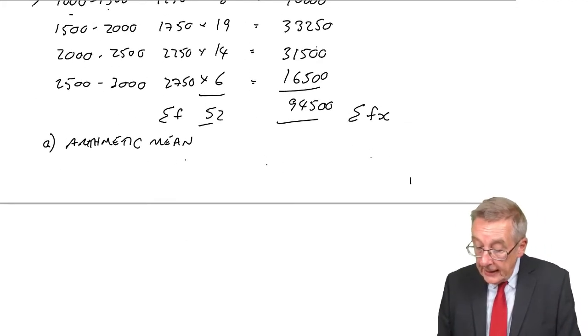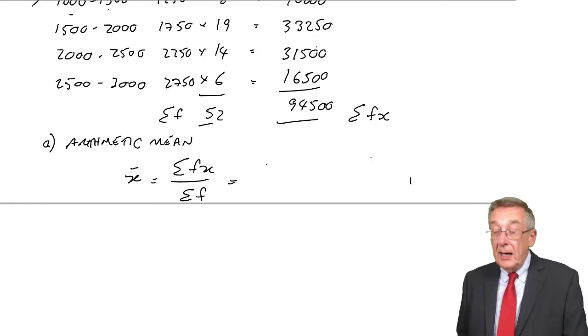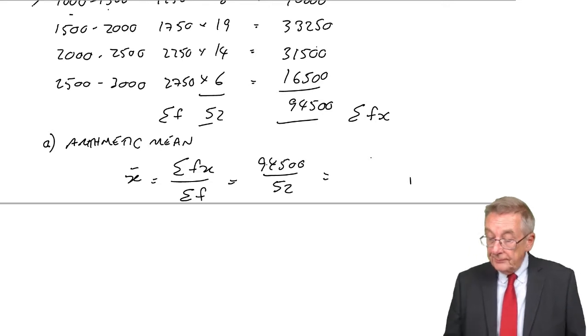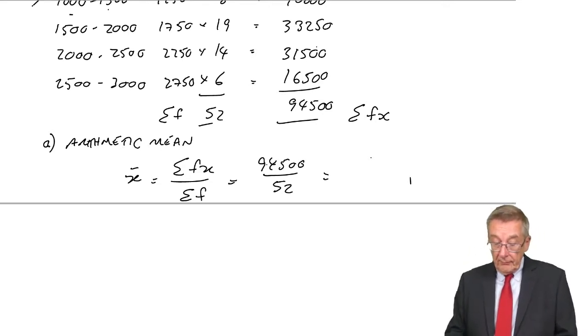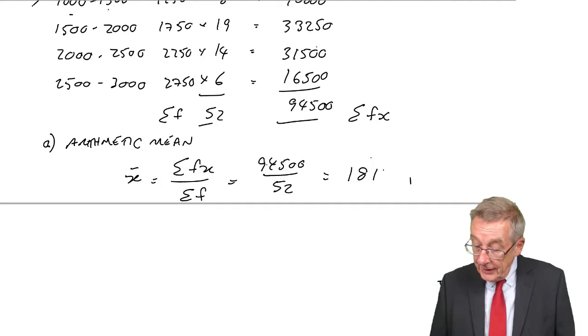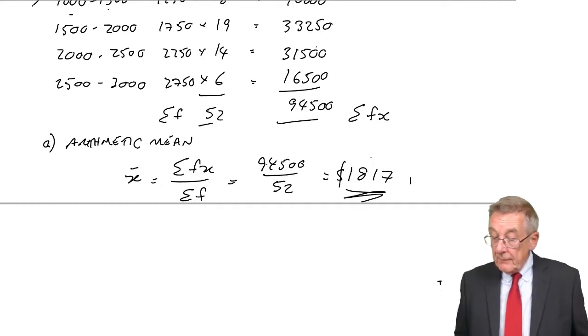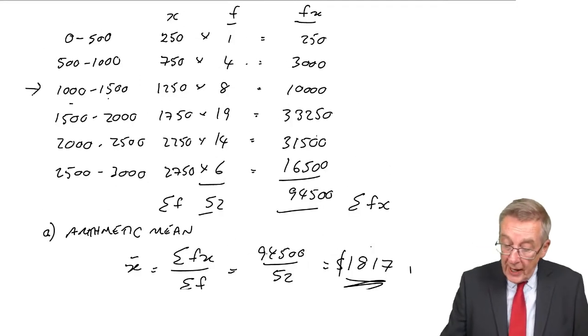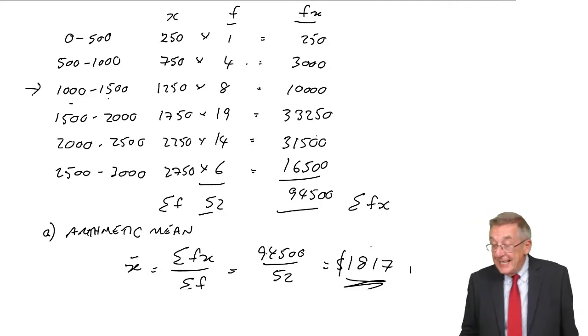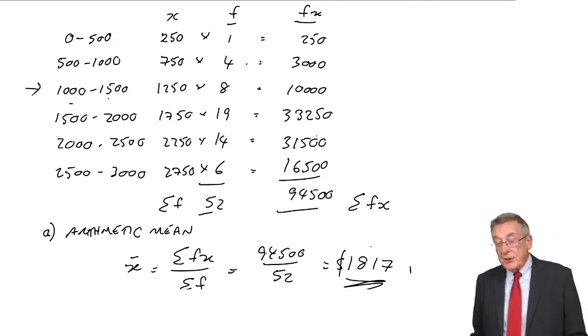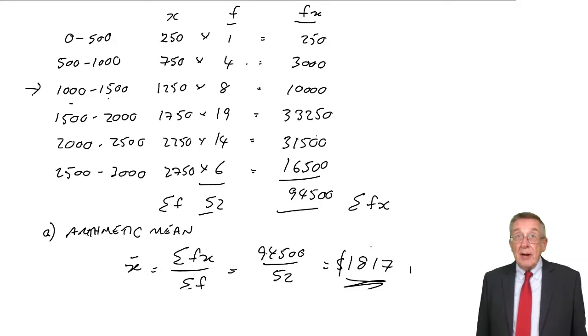And so the arithmetic mean, the symbol again is X bar, 94,500 divided by 52, 1,817 to the nearest dollar. And does that make sense? Remember, the average must be somewhere between 0 and 3000, and it is. So really, exactly the same as we did for discrete, just that one extra bit, let the midpoint represent the range.